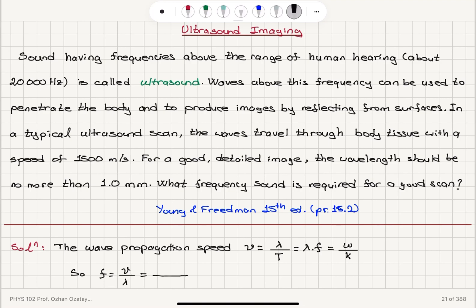for this case, we have the propagation speed of sound waves in the human tissue given as 1500 meters per second. The wavelength is to be 1 times 10 to minus 3 meters, which is 1 millimeter. So,